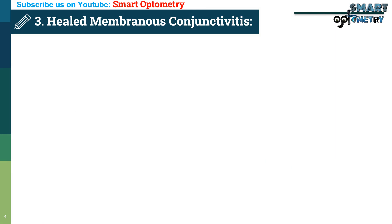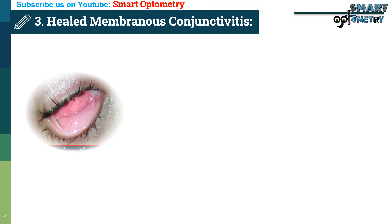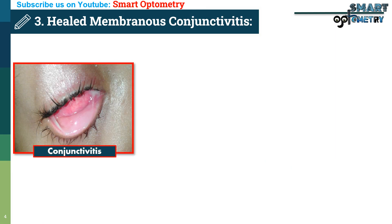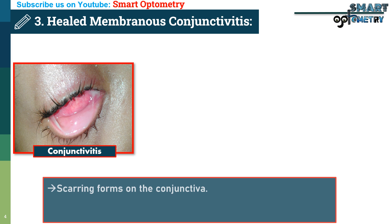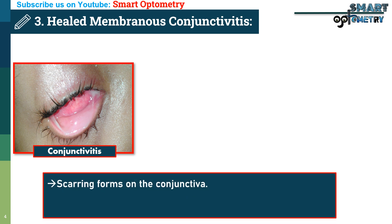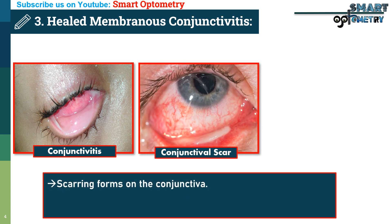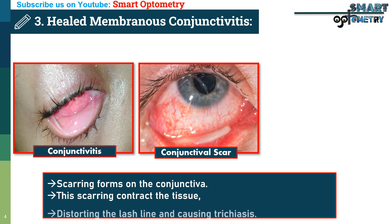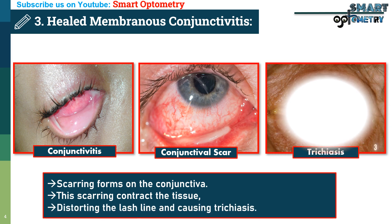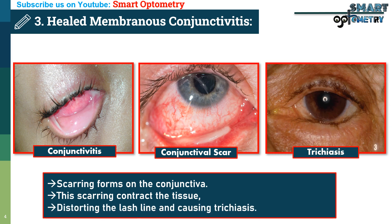3. Healed membranous conjunctivitis. When membranous conjunctivitis heals, scarring forms on the conjunctiva. This scarring contracts the tissue, distorting the lash line and causing inward lash misdirection.